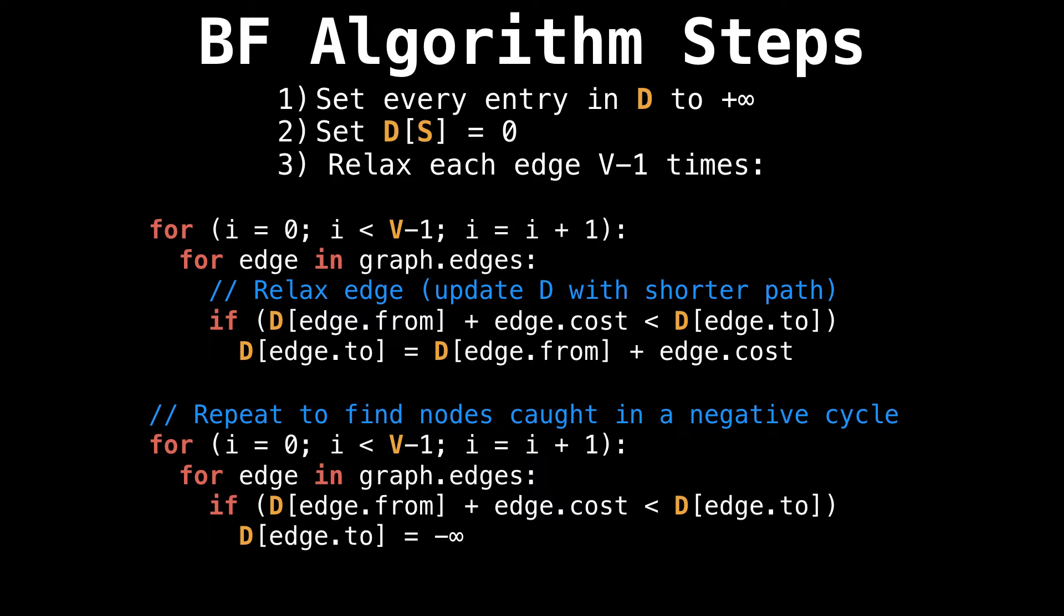To actually detect negative cycles, we don't do anything too special. All we do is run the algorithm a second time. What we're doing in the second pass is checking for any nodes that update to a better value than the known best value. And if they do, then they're part of a negative cycle, and we want to mark that node as having a cost of negative infinity.